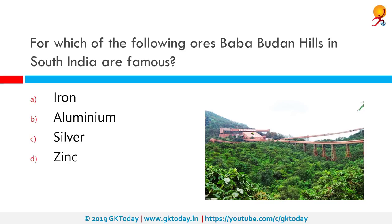For which ore are Baba Budan Hills in South India famous? They are famous for iron. Baba Budan Giri Range includes the highest peaks of Karnataka and is famous for iron ore mining. Other famous iron ore mines include Bailadilla in Bastar, Dalli Rajhara in Balod district of Chhattisgarh, and Singhbhum in Jharkhand.